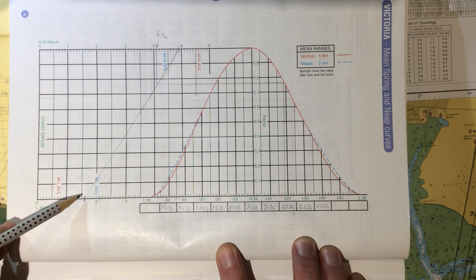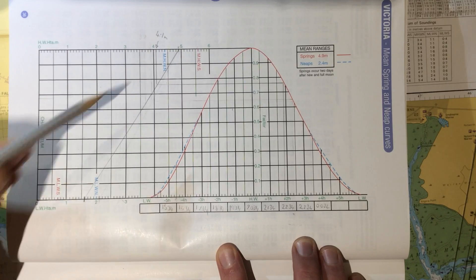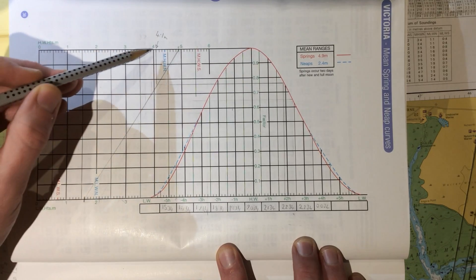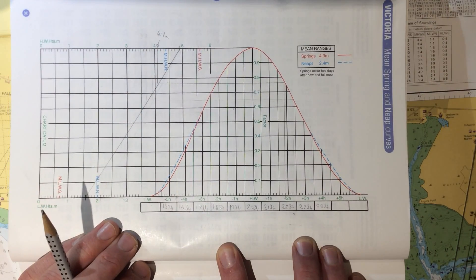The height of tide at low water in the early hours of the morning is 1.6, and subtracting one away from the other, the difference between this and this is 2.5 metres.